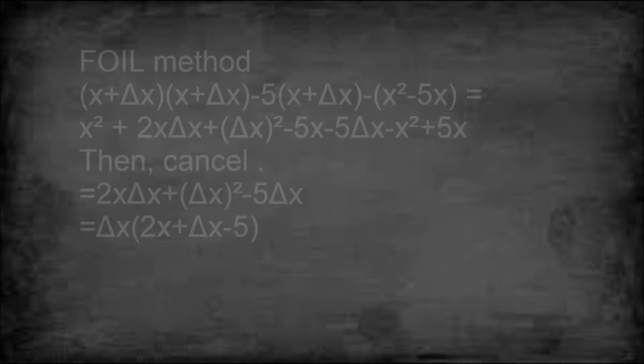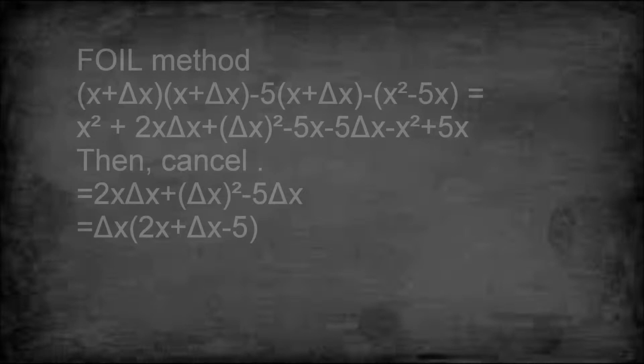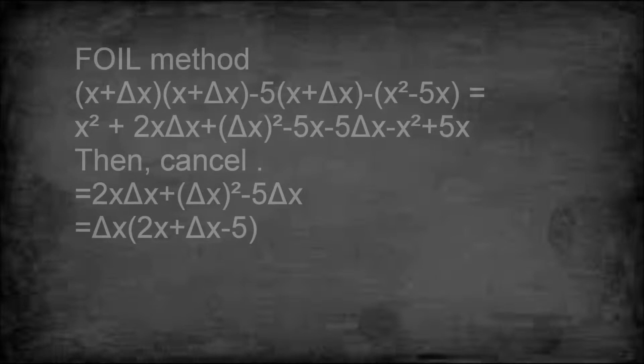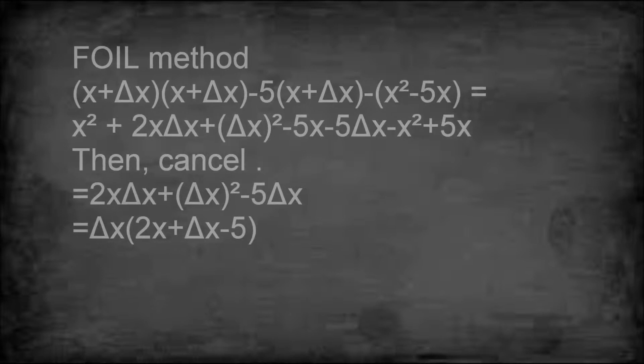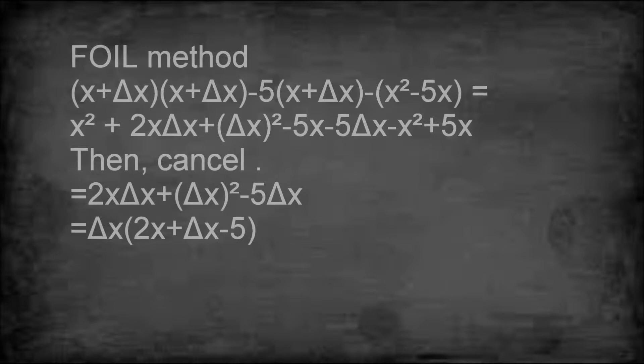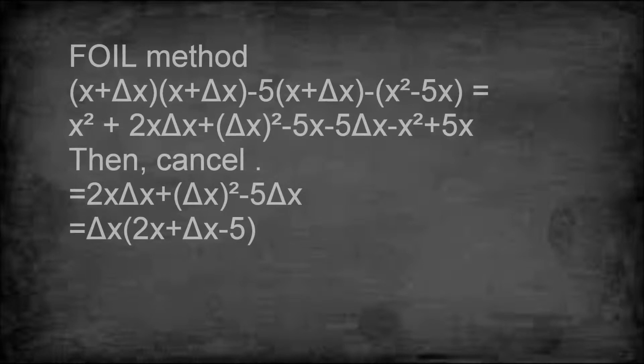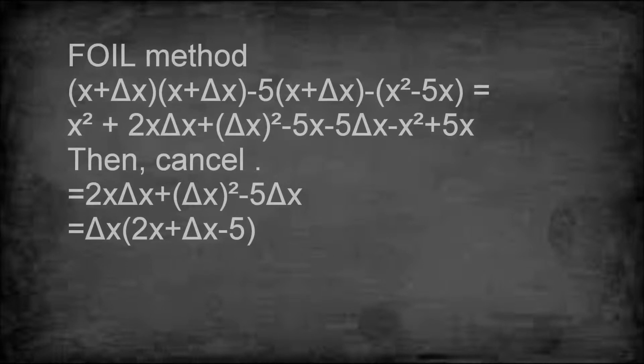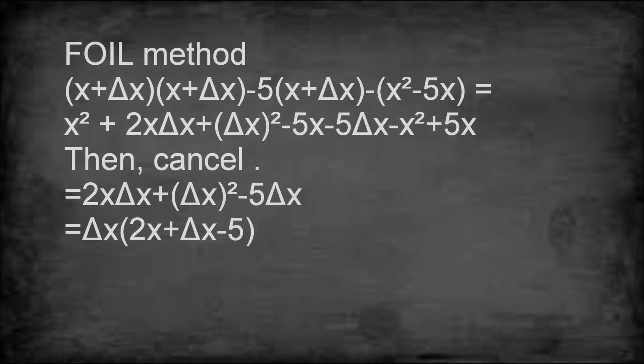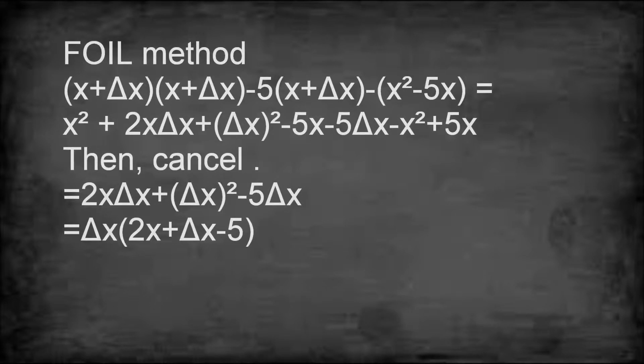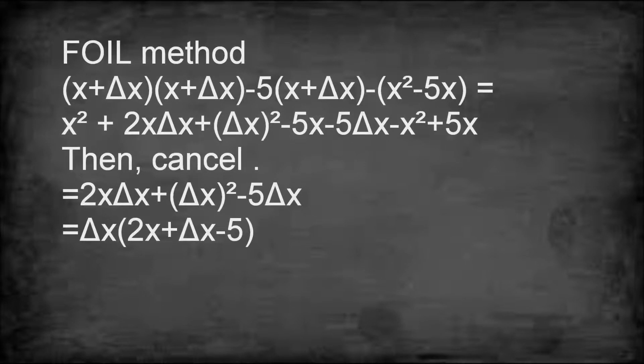So we're gonna use the FOIL method. X plus delta x squared becomes x plus delta x times x plus delta x minus 5 times x plus delta x minus x squared minus 5x. Then we distribute: x times x, x times delta x, delta x times x, delta x times delta x.